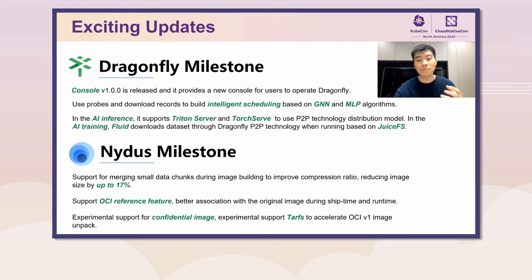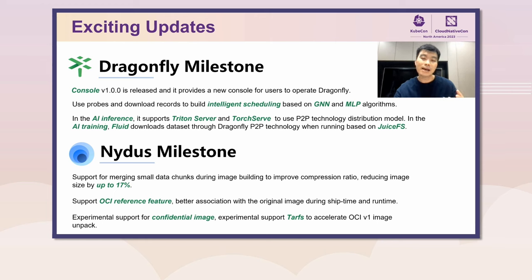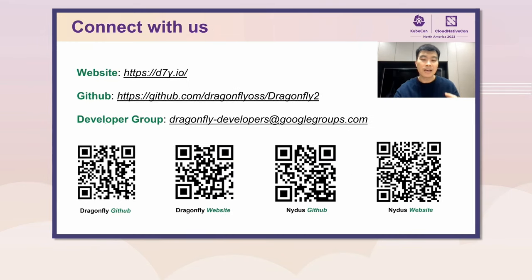Dragonfly supports merging small data chunks and the OCI reference feature. It supports confidential image configuration and uses TARFS to accelerate OCI image unpacking. If you are interested in file distribution, image acceleration, and AI model acceleration, you can scan the QR code and follow Dragonfly and Nydus.